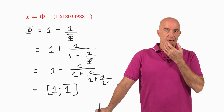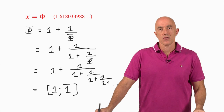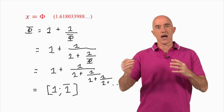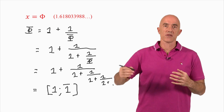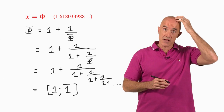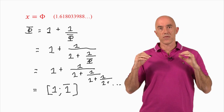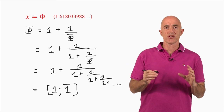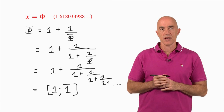That continued fraction for φ has a very special property: it is the slowest converging continued fraction. What that means is that if you truncate the fraction, you don't get a very good approximation to φ — it takes a lot of ones before you start to get a good approximation. We say φ has the slowest converging continued fraction, or that φ is the most difficult irrational number to approximate by a rational number. The most poetic way of saying this is that φ is the most irrational of the irrational numbers.